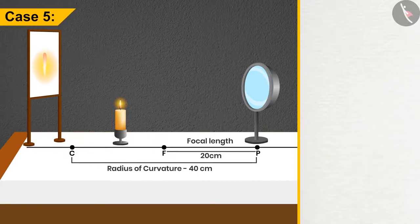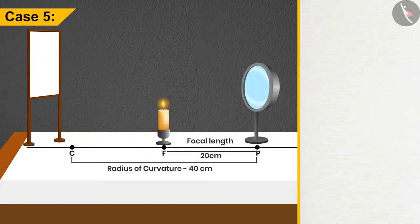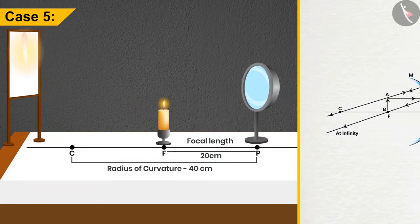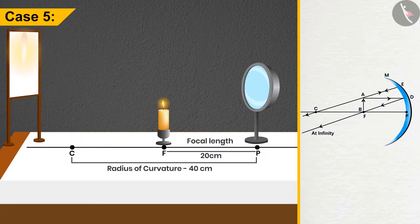Case 5: If the candle is placed at F, then the image will be seen to be formed at infinity—highly enlarged in size and real and inverted in nature.